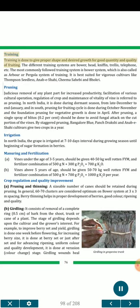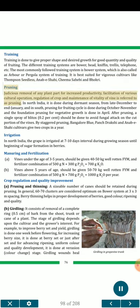Training: Training is done to give proper shape and desired growth for good quantity and quality of fruiting. The different training systems are bower, head, Kniffin, trellis, telephone, etc. The most commonly followed is the bower system, also called arbor or pergola system, which is best suited for vigorous cultivars like Thompson Seedless, Anab-e-Shahi, Chima Sahabi and Bodhi. Pruning: Judicious removal of plant parts for increased productivity, facilitation of cultural operations, regulation of crop and maintenance of vine vitality. In North India, pruning is done during dormant season (late December to end January). In South, pruning for fruiting cycle is done during October–November and foundation pruning for vegetative growth is done in April. After pruning, a single spray of blitox 0.2% should be done to avoid fungal attack on cut portions of the vine. By staggered pruning, Bangalore Blue, Panch Draksha and Anab-e-Shahi cultivars give two crops a year.